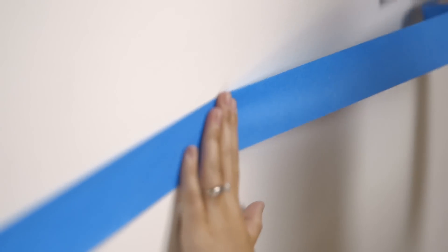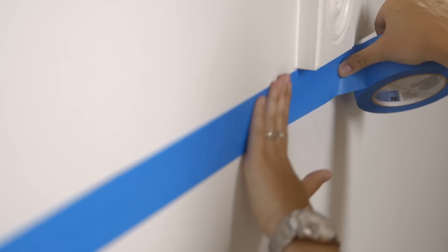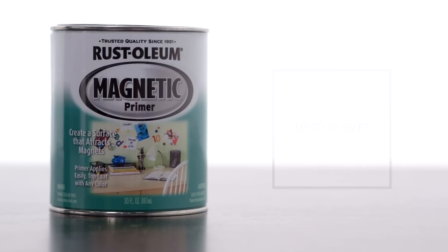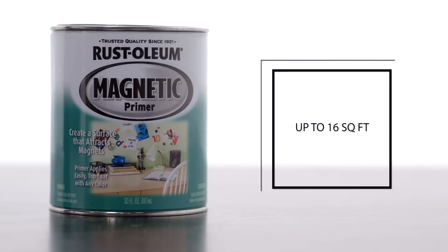Use painter's tape to mask your coverage area before moving on to the next step. One can of Specialty Magnetic Primer will cover up to 16 square feet.